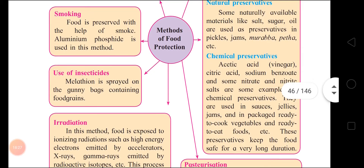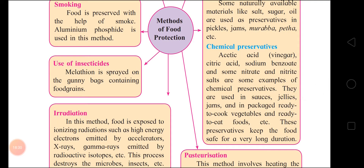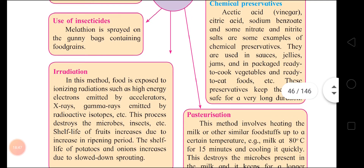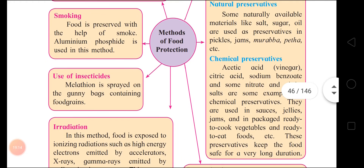Third: use of insecticides — there are many chemical insecticides which are sprayed on the containers of grains. Example: Malathion. Insecticides protect the grain by killing infesting insects. Fourth: irradiation — food is exposed to ionizing radiations such as high-energy electrons emitted by accelerators, x-rays, and gamma rays emitted by radioactive isotopes. Irradiation destroys microbes, insects, etc. and is also a method of food protection.